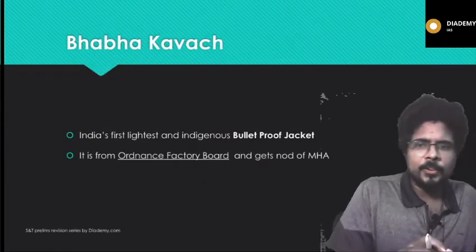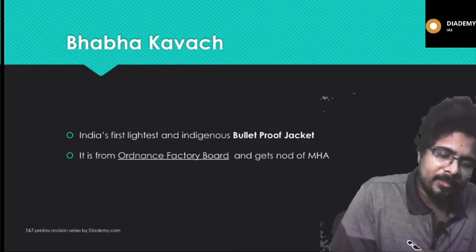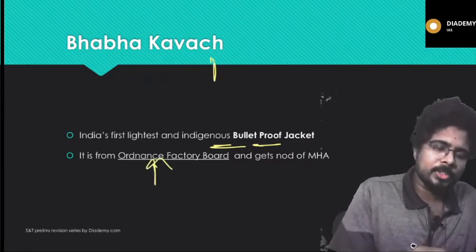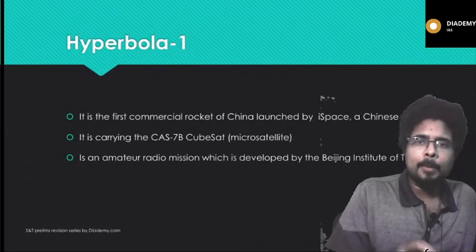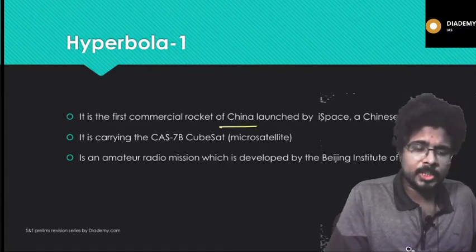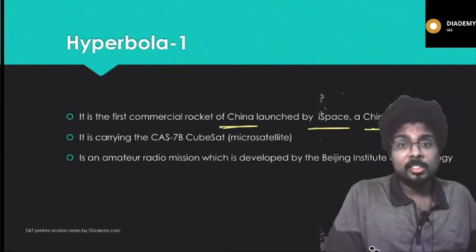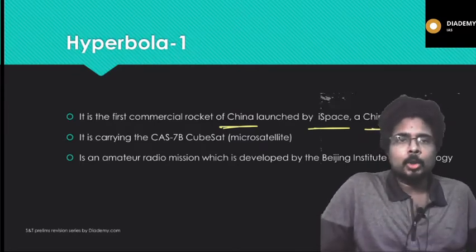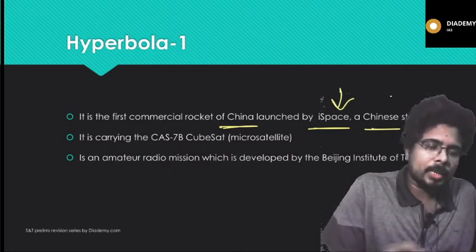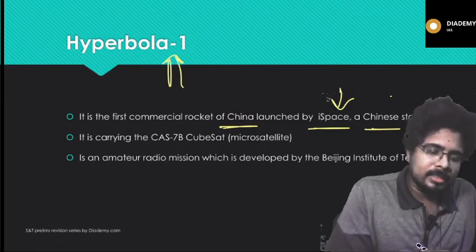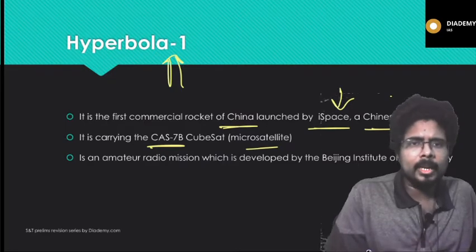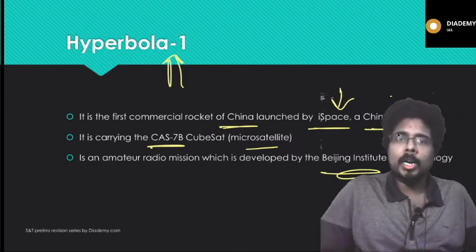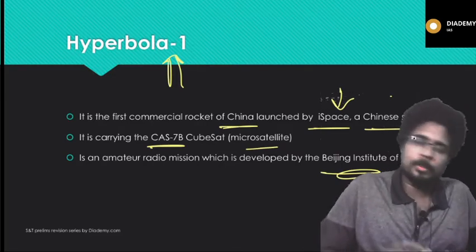Next, Baba Kavach. Baba Kavach is the lightest and most effective indigenously built bulletproof jacket, built by the Ordnance Factory Board. Next, Hyperbola 1. Hyperbola 1 is the first commercial rocket of China, launched by iSpace, which is a Chinese startup. Chinese private agencies have also entered the rocket-launching arena. iSpace has launched a commercial rocket called Hyperbola 1 carrying the CAS-7B CubeSat, a micro satellite developed by the Beijing Institute of Technology and used for radio missions.